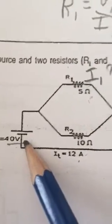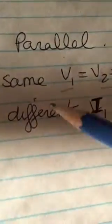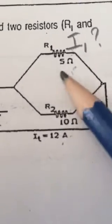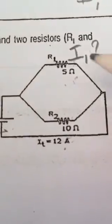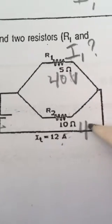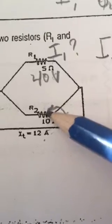In a parallel circuit, according to Kirchhoff's laws, the voltage is the same everywhere. So if I have 40 volts at the source, this means I have 40 volts here and here—40 volts for this resistance.